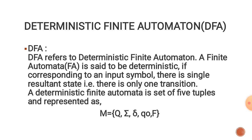DFA refers to the Deterministic Finite Automata. A finite automata FA is said to be deterministic if, corresponding to an input symbol, there is a single resultant state — that is, there is only one transition. Deterministic Finite Automata is a set of 5 tuples and represented as M = (Q, Σ, δ, q0, F).